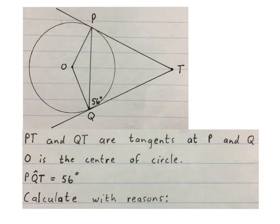Before you start answering the questions they ask you, you must first visualize what's going on here. They are saying PT and QT are tangents at P and Q. So there's my PT and there's QT.